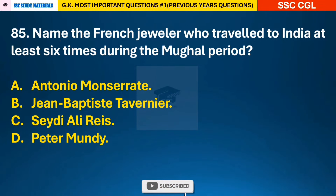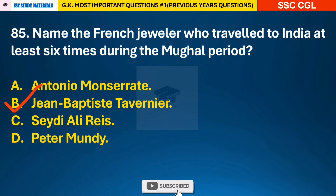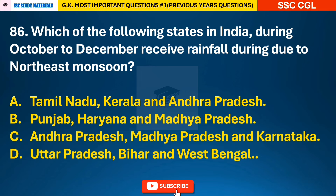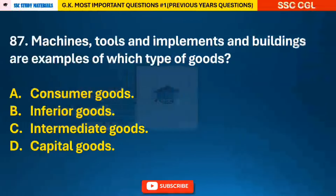Question 85: Name the French jeweler who traveled to India at least six times during the Mughal period. Question 86: Which of the following states in India during October to December receive rainfall due to the northeast monsoon? — answer A: the states are Tamil Nadu, Kerala, and Andhra Pradesh.